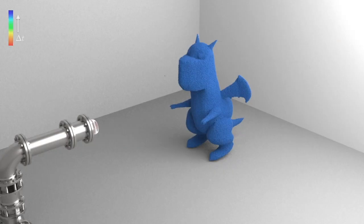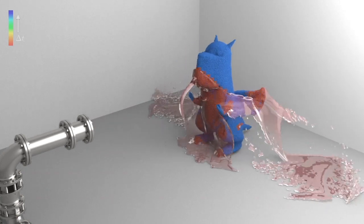In this example, a rubber dragon takes a bath from a liquid jet. Note the struggling hands with smaller time steps due to the CFL condition.